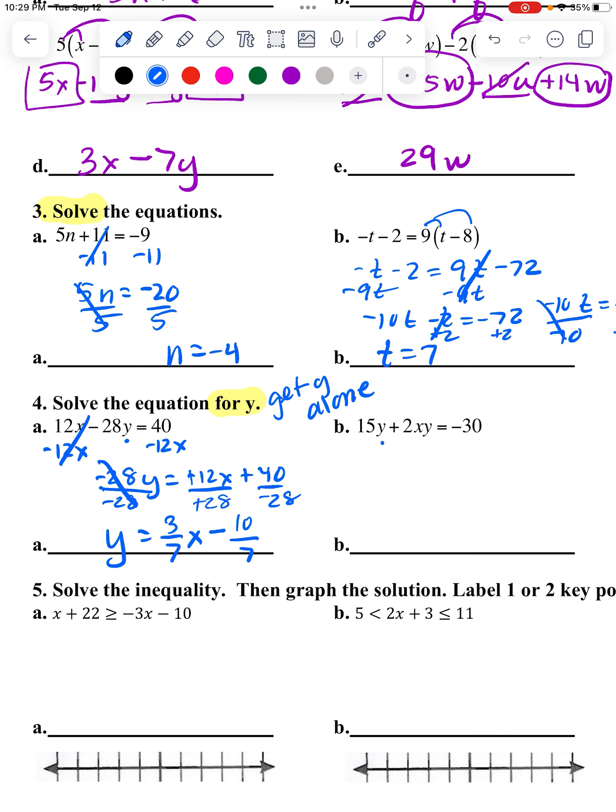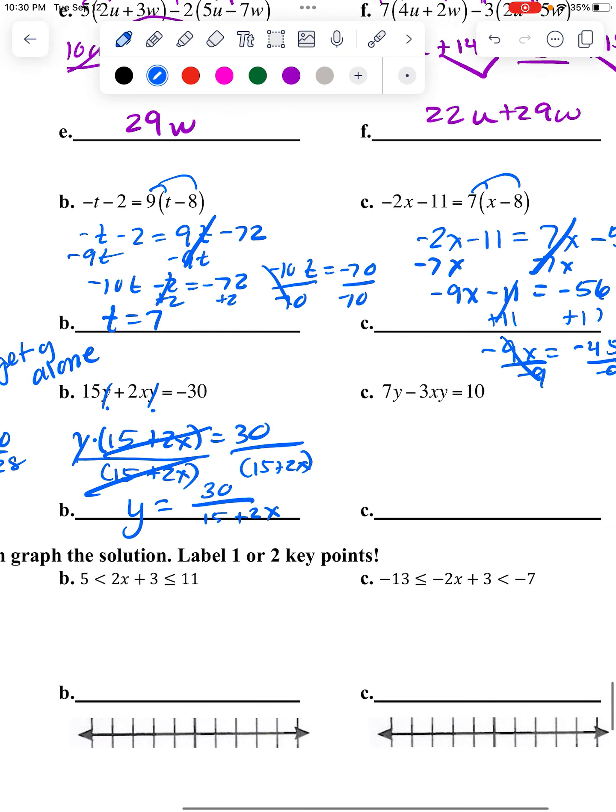This is one of those tricky ones where somebody passed out all the Y's and now they want to collect them back. So collect them back in the front of the problem, leaving you with a 15 and a 2X. And that's multiplied by Y. So to get rid of multiplication, since we're trying to isolate or get that Y alone, I'm going to just divide it by that whole shebang. So this is gone. Y equals the 30 divided by 15 plus 2X. And your equation is not really a solving. It is finding what you have when your Y is all alone.